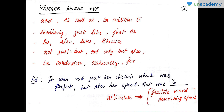In continuation with positive trigger words we have already learnt, there are some other words like: 'and,' 'as well as,' 'in addition to,' 'similarly,' 'just as,' 'just like,' 'not just,' etc. For instance, if there is a statement like 'it was not just her diction which was perfect, but also her speech that was' — 'but also' is continuing in the trend of her diction being perfect. So we are looking for a word which describes the speech positively; a word like 'articulate.'